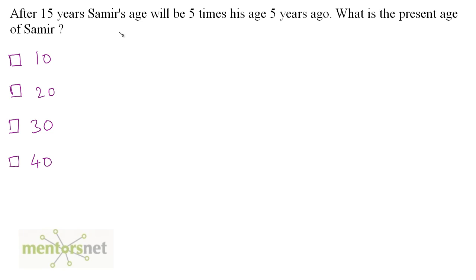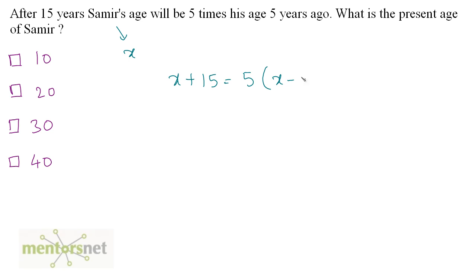Let the current age of Samir be x years. So, after 15 years, x plus 15, this age will be equal to 5 times his age 5 years ago. His current age is x, so 5 years ago it is x minus 5.